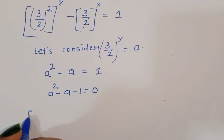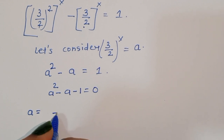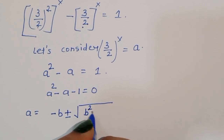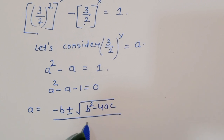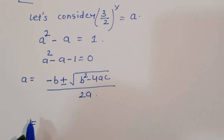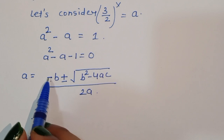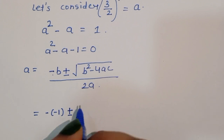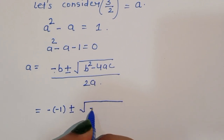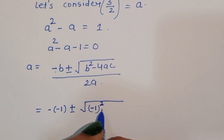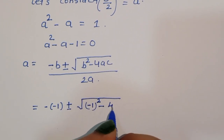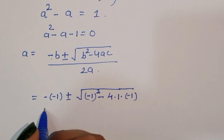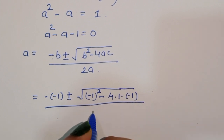Now the value of a using the quadratic formula: a = (−b ± √(b²−4ac)) / 2a. The coefficient of b is −1, so we write minus(−1) ± √((−1)² − 4 times 1 times (−1)), all divided by 2 times 1.